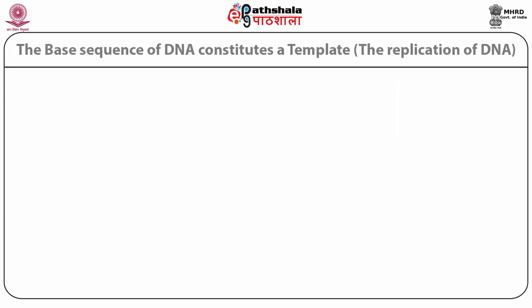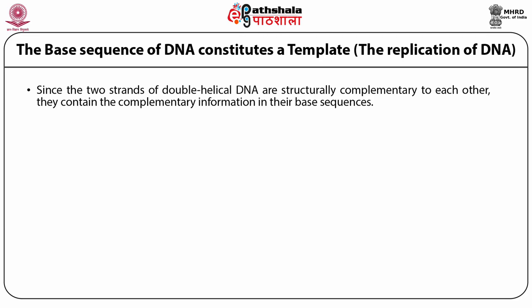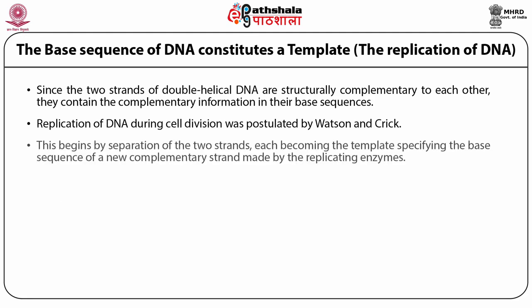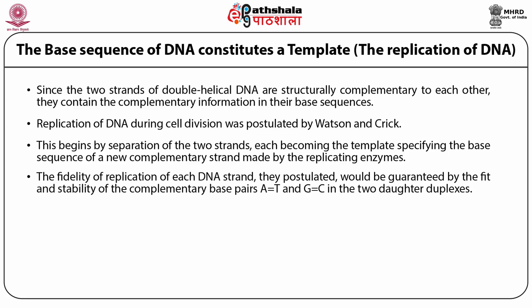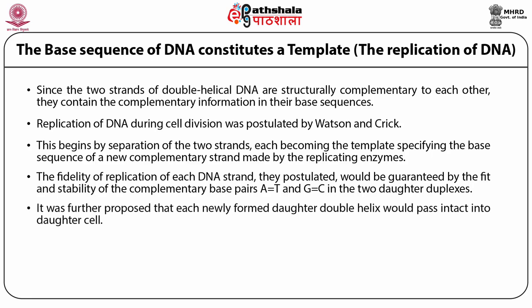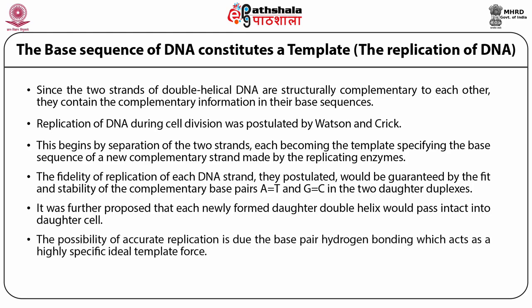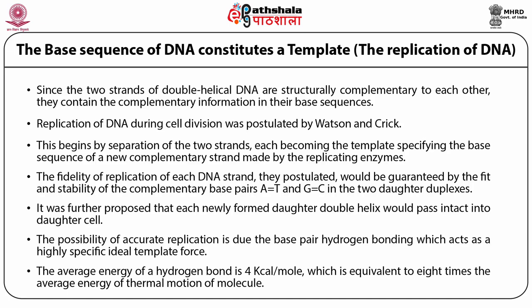Since the two strands of double helical DNA are structurally complementary to each other, they contain complementary information in their base sequences. Replication of DNA during cell division was postulated by Watson and Crick — this begins by separation of the two strands, each becoming the template specifying the base sequence of a newly synthesized complementary strand. The fidelity of replication is guaranteed by the fit and stability of the complementary base pairs AT and GC. Each newly formed double helix passes intact into the daughter cell. The possibility of accurate replication is due to base pair hydrogen bonding, which acts as a highly specific ideal template force. The average energy of a hydrogen bond is 4 kcal/mol.